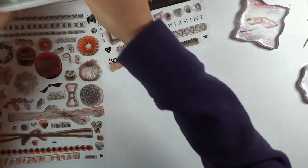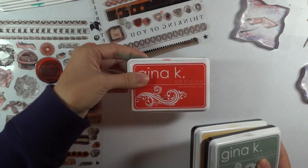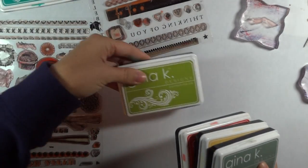The ink pads that I'm using today, I've got the Gina K Moonlit Fog, Sweet Corn, Red Hot, Jelly Bean Green, and Turquoise Sea.